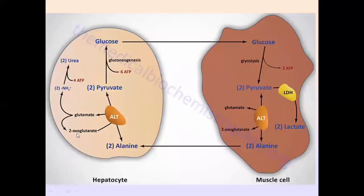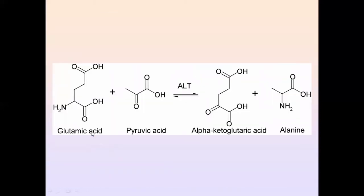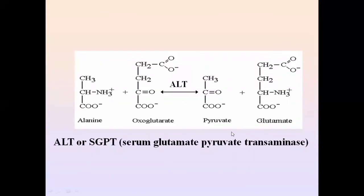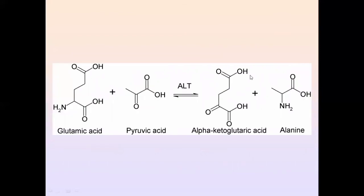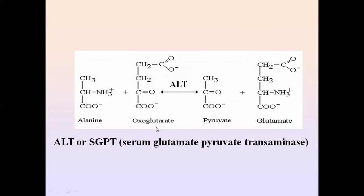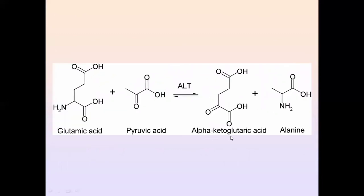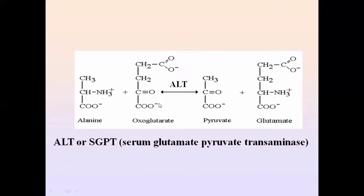An important clarification: alpha-ketoglutarate and oxoglutarate are the same thing. Oxoglutarate is simply the anionic form of alpha-ketoglutaric acid — when the carboxylic groups are in their anionic form, it is called oxoglutarate. The prefix '2-oxoglutarate' refers to this same molecule. Students often ask about the difference, but they are the same compound — alpha-ketoglutarate and 2-oxoglutarate are identical, just different naming conventions.